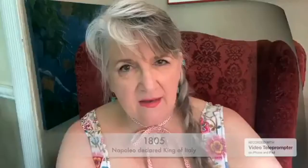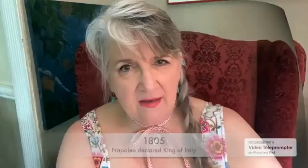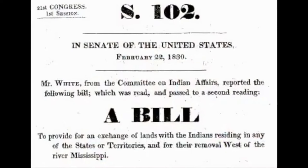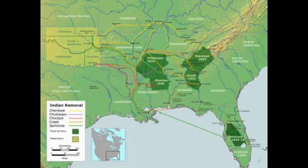The Indian Removal Act was passed by the U.S. Congress on May 26, 1830. This law authorized the president to negotiate with southern Native American tribes for their removal to a federal territory west of the Mississippi River.